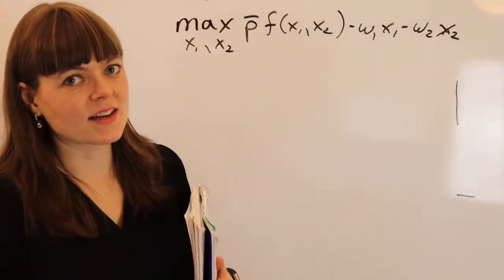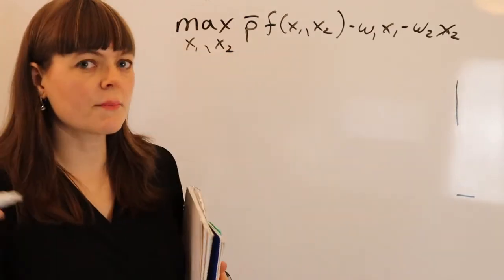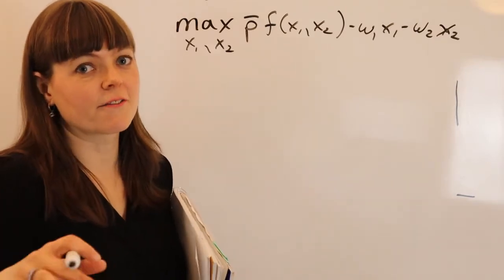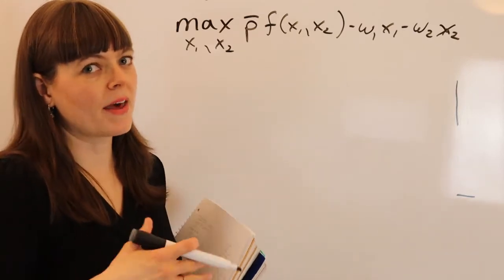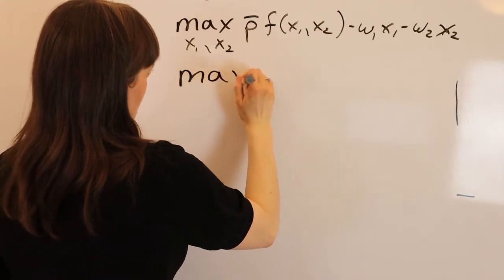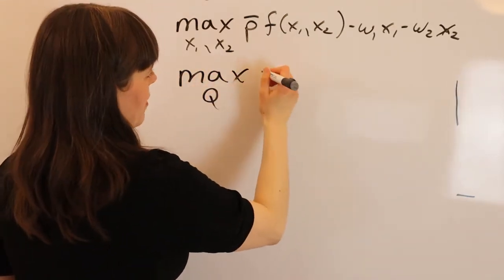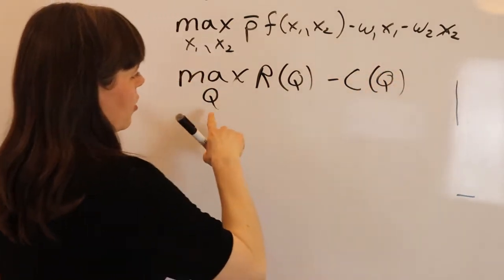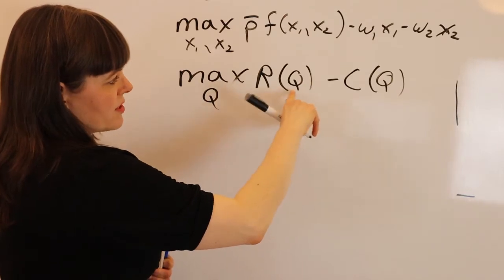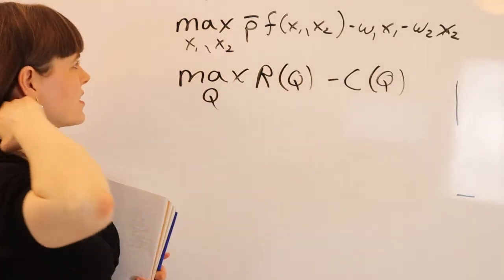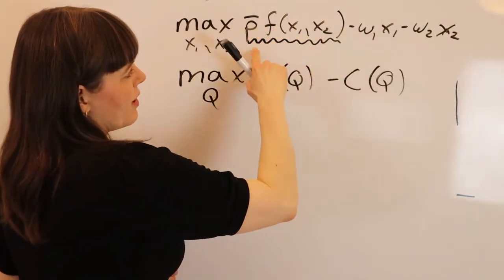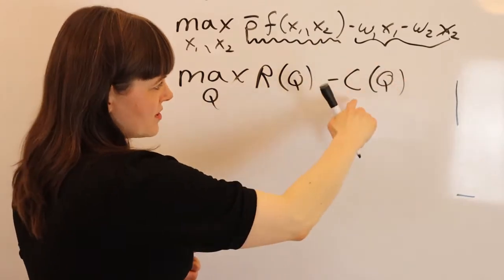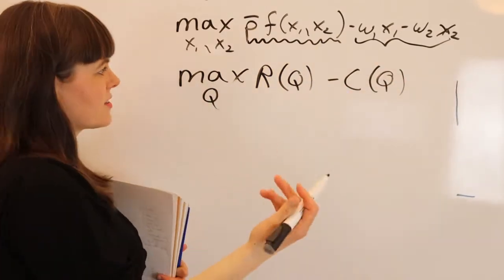Now with the monopoly model, it's going to be the exact opposite. The firm is going to actually influence the price. So we have a number of different ways of setting up a monopoly model, and the first, most classic version is to let the firm choose quantity, and then the price will be determined by the quantity they choose. All profit functions are going to be revenue minus total cost, so the firm is choosing quantity. They have revenue, which is a function of the quantity they choose, minus cost, which is also a function of the quantity they choose.